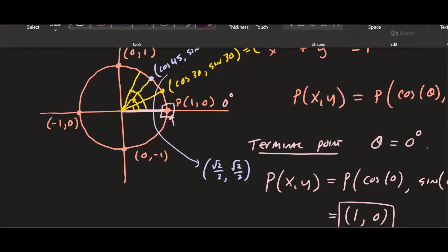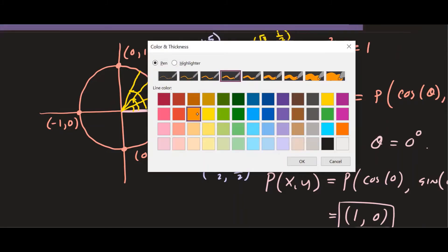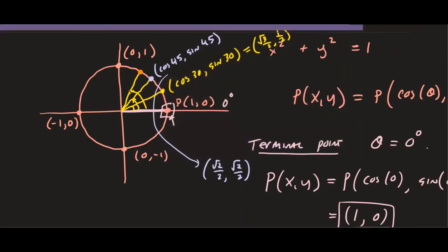Lastly, for 60°, the terminal point is determined by (cosine 60°, sine 60°). From memory, cosine of 60° is 1/2 and sine of 60° is √3/2. These are the three important special angles we memorize, and it's good to understand them alongside the other angles on the unit circle.